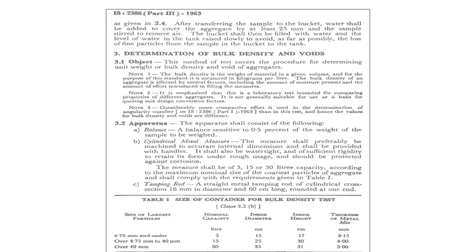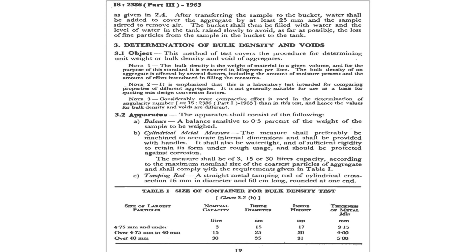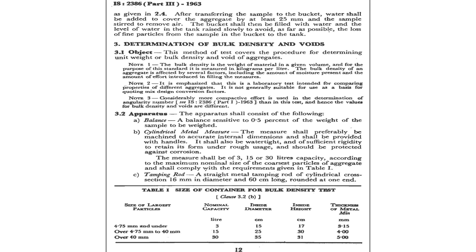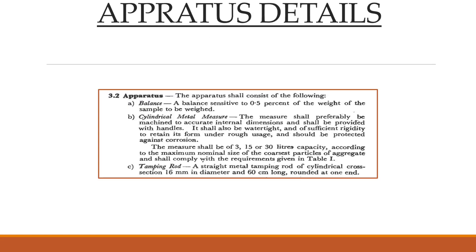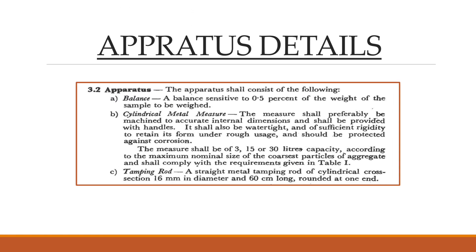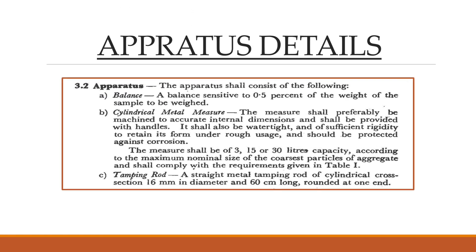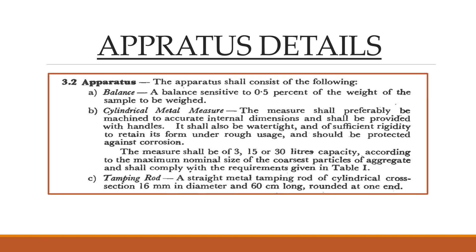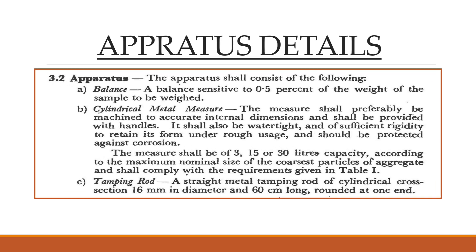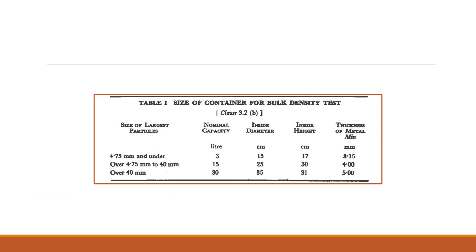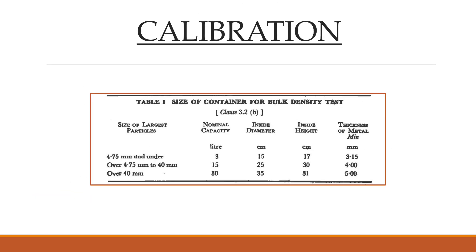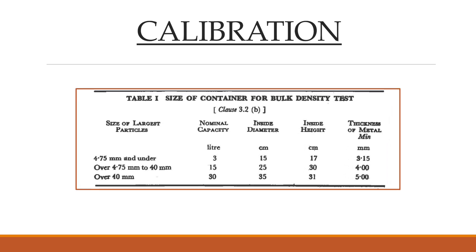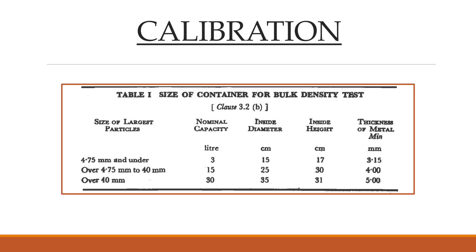The specification of apparatus is taken from IS 2386 Part 3 1963, as shown here. The requirements for the metal containers, tamping rod, and weight balance are shown in this specification. Calibration for the size of containers is also shown here as per specifications.